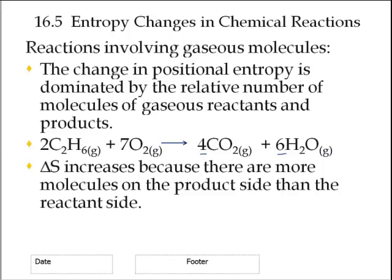Welcome to AP Podcast 16.5. This has to do with entropy changes that we see in a chemical reaction. When you're looking at these kinds of reactions, what you want to notice is how many moles of gas you have on the reactant side versus how many moles of gas you have on the product side.